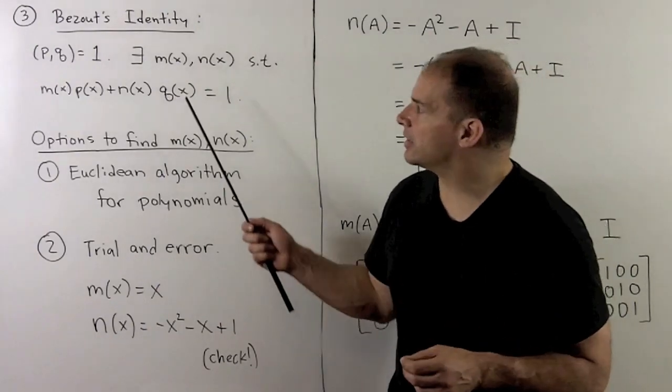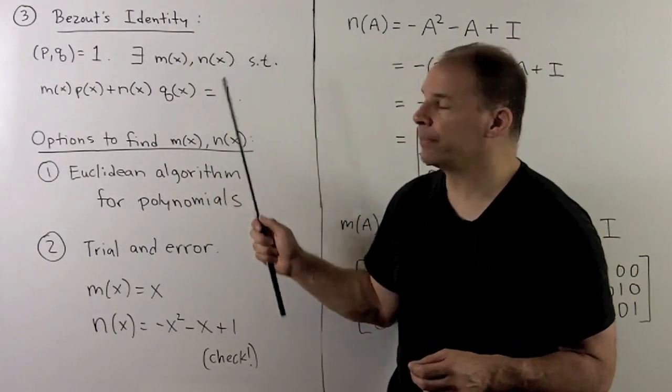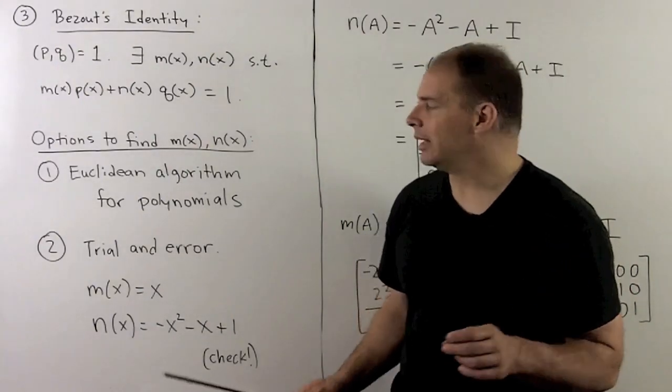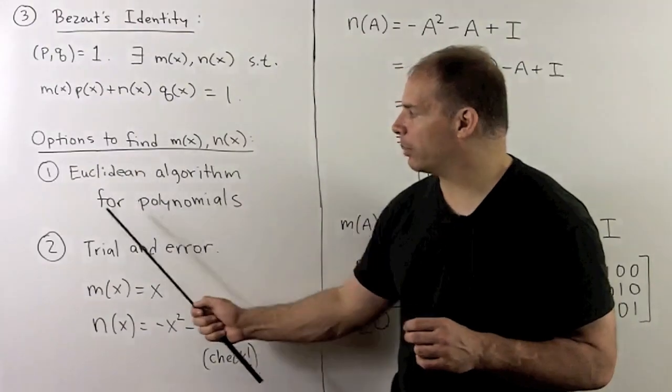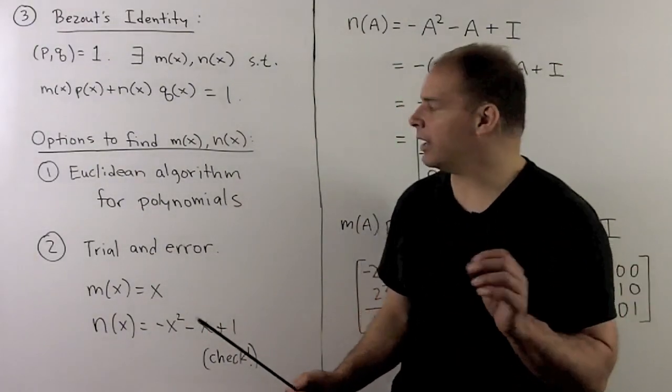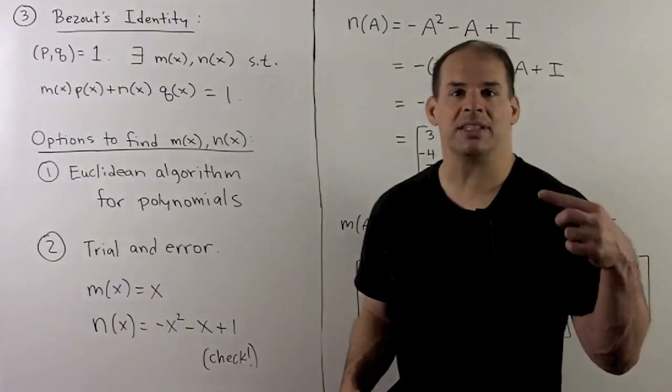The statement of Bezout's identity gives no method for finding M or N. To find those, we have two options. Either consider the Euclidean algorithm for polynomials, that gives a method to get M and N. If you understand the Euclidean algorithm for integers, then it's going to be the same idea.